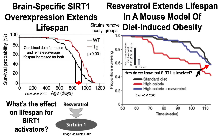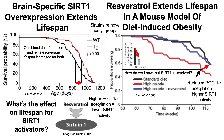Sirtuins remove acetyl groups, and a well-known marker of SIRT1 activity is acetylation of the PGC1-alpha protein. On a high calorie diet, PGC1-alpha acetylation was very high, suggesting lower SIRT1 activity. However, in the condition where the high calorie diet was fed with resveratrol, there was a significant reduction in PGC1-alpha acetylation — about 60 to 70% higher SIRT1 activity in mice fed resveratrol on the high calorie diet.